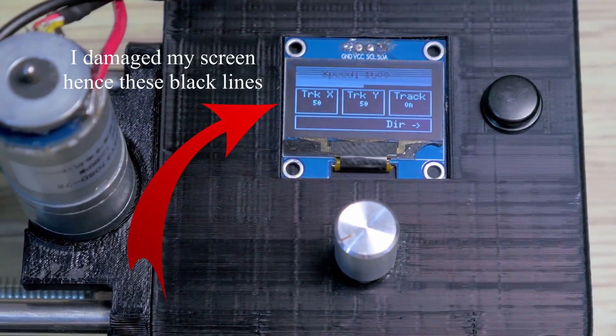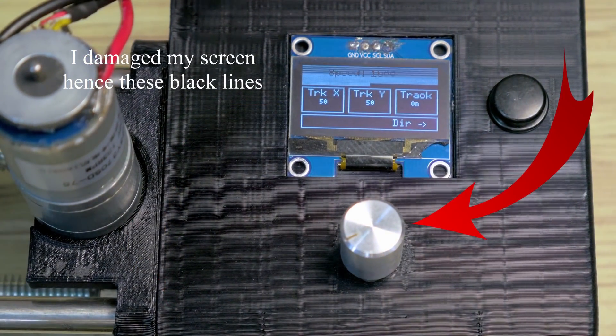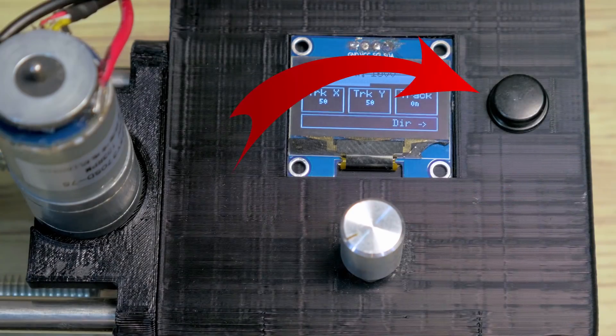The last electronics are the OLED screen which is used to display the menu, the rotary encoder which is used to navigate the menu and configure it, and lastly the button that is used to start and stop the slider movement.